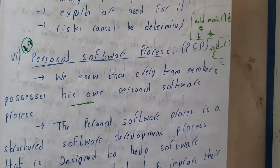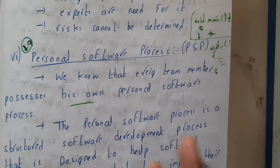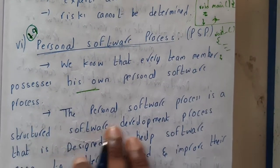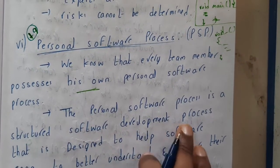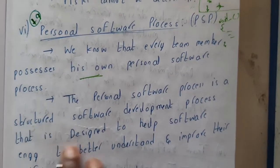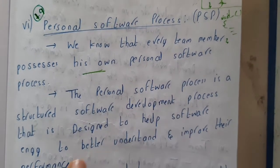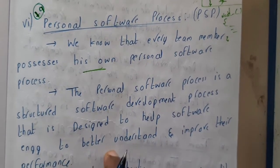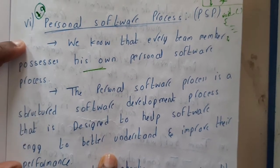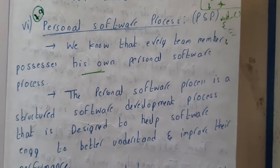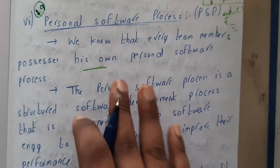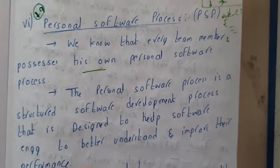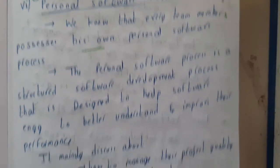In the same way, every team member possesses his or her own software processes — their own process models for how to plan, when to give time, and when to do things. The Personal Software Process is a structured software development process designed to help software engineers better understand and improve their performance, based on basic analysis and research in this field.